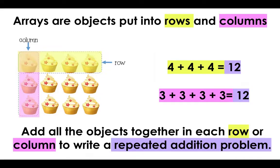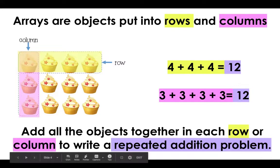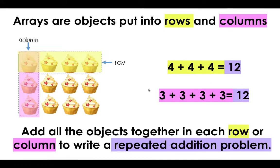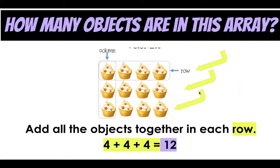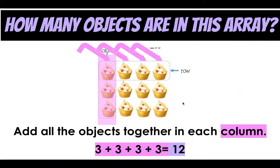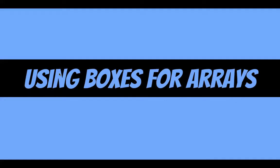First, let's review quick. What is an array? An array is objects put into rows and columns. You add all the objects together in each row, or each column, to write a repeated addition problem. You can either add those rows together or add those columns together to write those repeated addition problems.